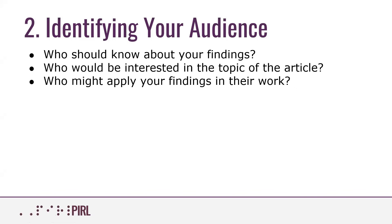The second point is identifying your audience — who should know about your findings. The audience helps you understand what type of journal might be beneficial, because journals are typically associated with a certain discipline, society, association, profession, or content area. Figure out who would be interested in your findings, who would be interested in the topic, and who might apply your findings in their work. When you publish, you want people to be reading it, critiquing it, and pulling it into their work.